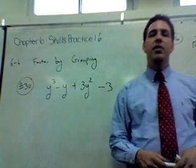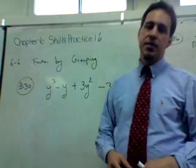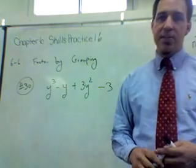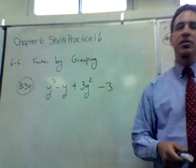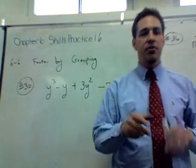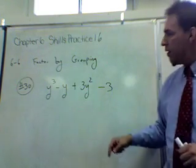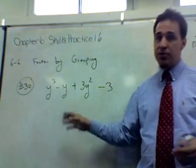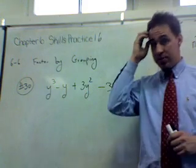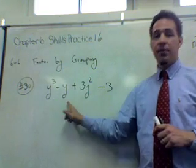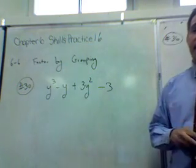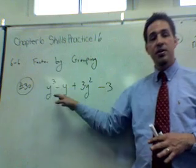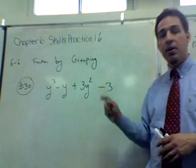Now we're going to go to factoring by grouping, which is 6-6 on skills practice 16. This kind of question is easy to recognize because instead of three terms or two terms — like we have with difference of squares or trinomial squares — we have four terms. The best way to group things is to take the terms that are similar to each other, group them, and then factor those terms.